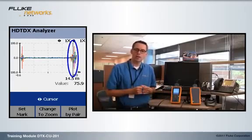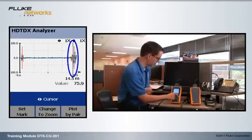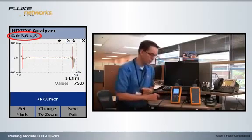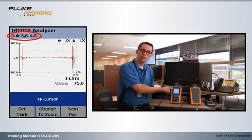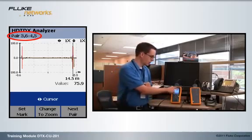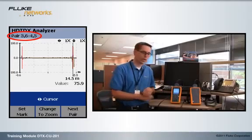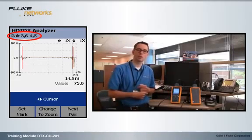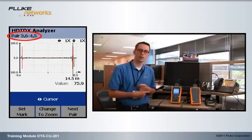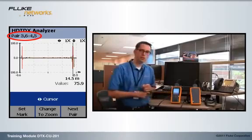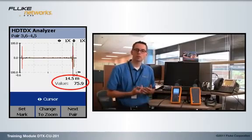We're only interested in that pair combination that failed, which is 3645. So I'm going to press the F3 key until I get to 3645 in the top left-hand corner there. Now the cursor has automatically gone to the largest source of crosstalk, which happens to be right over the red line at the remote end, suggesting that we have an issue in our connection at the far end of the link. Below it, you'll see a value of 75.9. That's a percentage value. Is it good or is it bad?